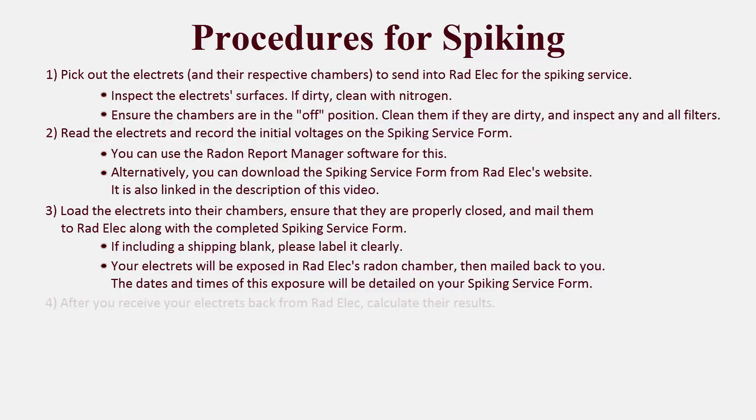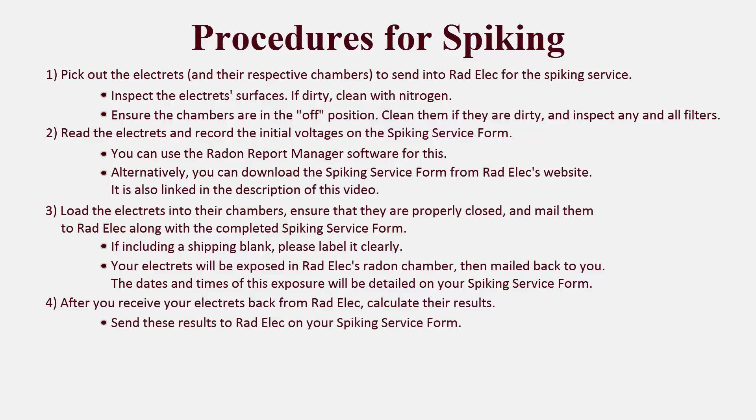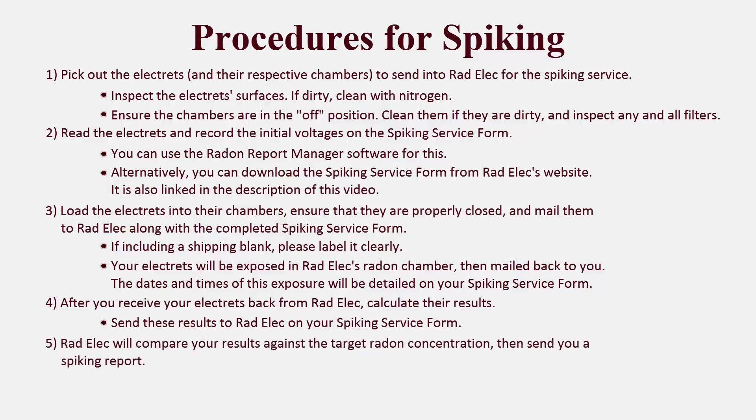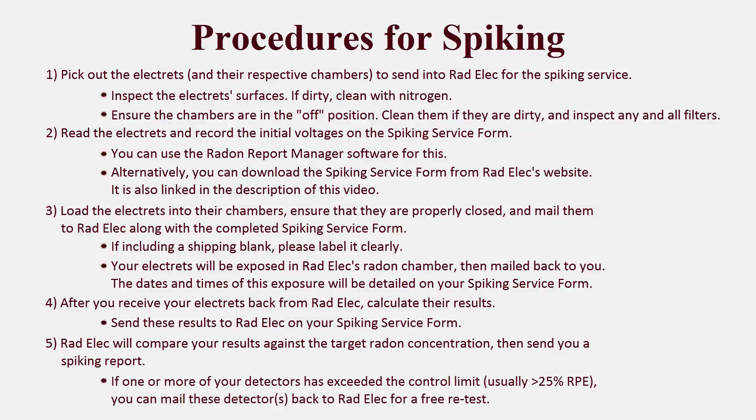And this takes us to step four. After you receive your electrets back, calculate their results — you can use the Radon Report Manager for this step. After you've calculated their results, send them back to us on your spiking service form, usually via email or fax. The fifth step is when Radelec compares your results against the known target radon concentration. We will email you a spiking report so that you can see how accurate your results are. If one or more of your detectors has exceeded the control limit, which is usually greater than 25% relative error, Radelec will offer you a free retest.